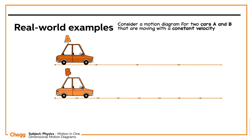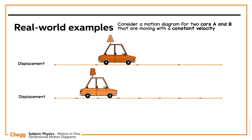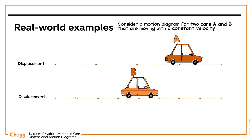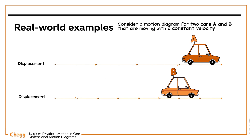In equally spaced time intervals in the motion diagram, the fast-moving car has a large magnitude of its displacement vector. So, from the given motion diagram, car A is moving faster than car B.